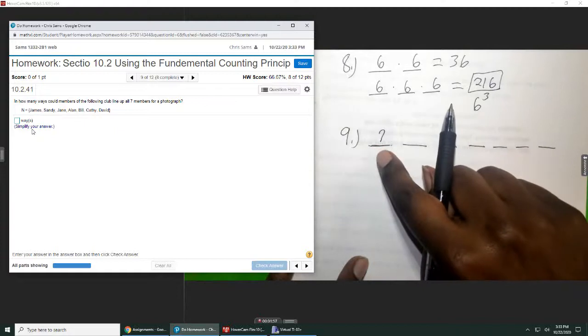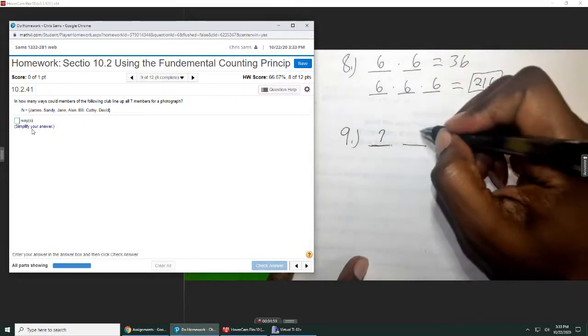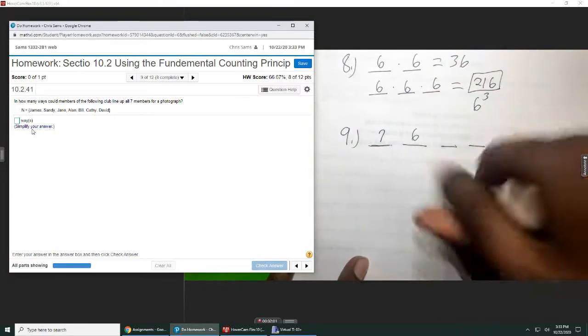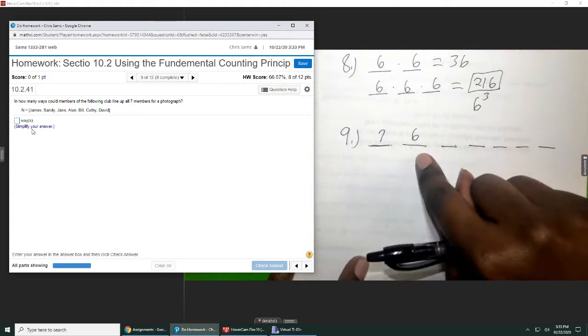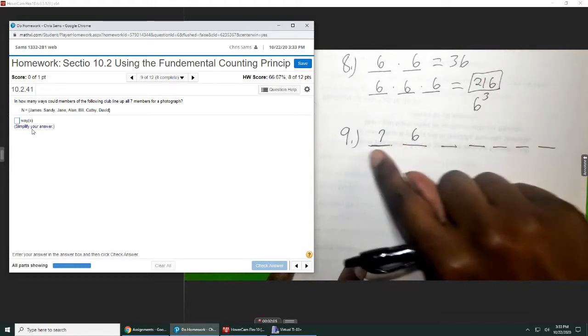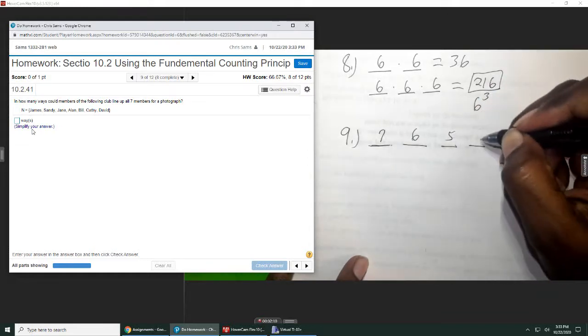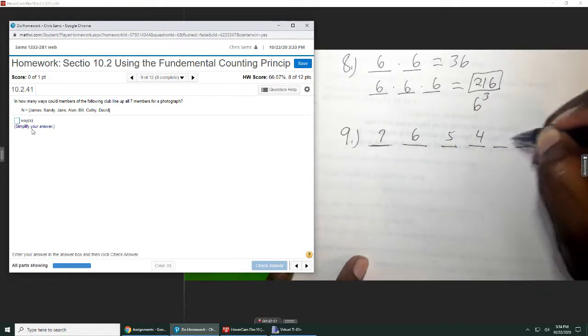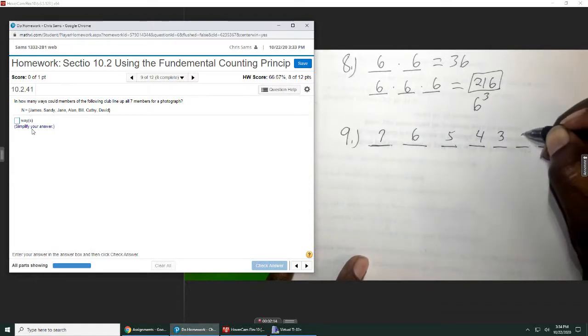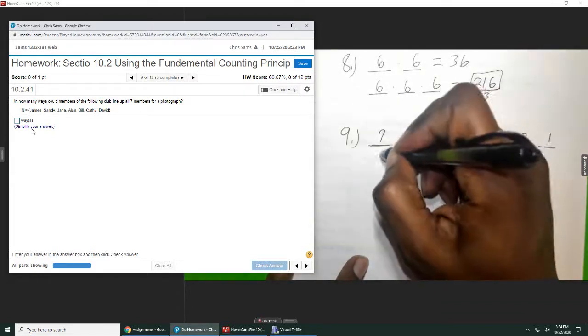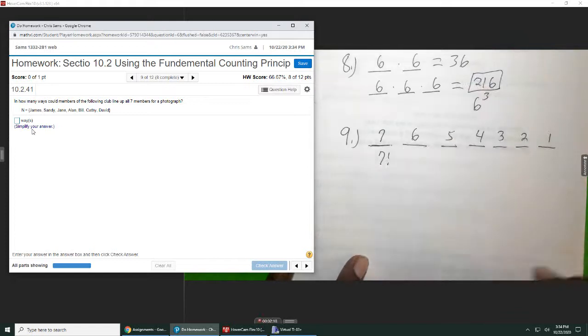But once I use one of those people, then there's only six people because I can't use all seven of them and put the same person in the first and the second slot. So each time you use a person, you lose one from your count. And so seven times six times five times four times three times two times one, otherwise known as seven factorial.